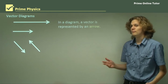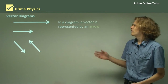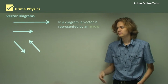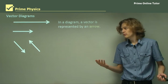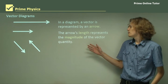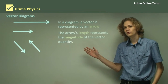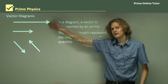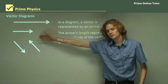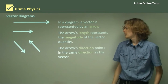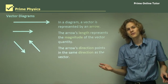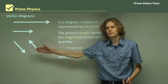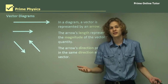Now in a diagram, as we know, vectors are represented by arrows. The arrow's length represents the magnitude of the vector quantity — so this vector is bigger than this vector — and the arrow's direction points in the same direction as the vector. So these vectors, for example, are pointing in opposite directions.